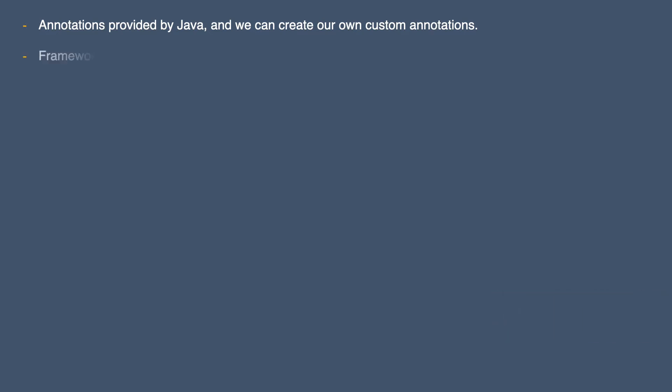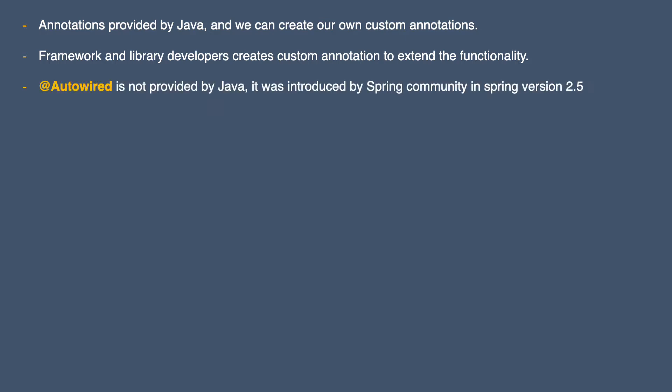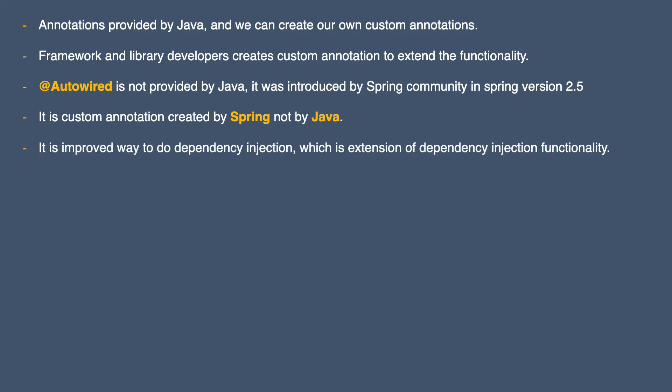Frameworks and library developers can also create custom annotations to extend their functionality. This autowire annotation is not provided by Java — it was introduced in the Spring community in Spring version 2.5. So it is a custom annotation created by Spring, and it is an improved way to do dependency injection — an extension of the dependency injection functionality of the Spring framework.